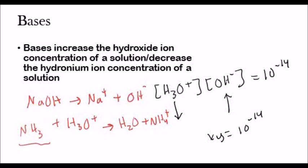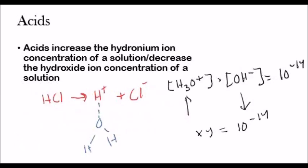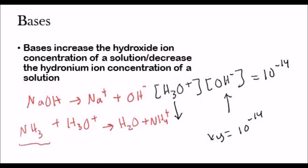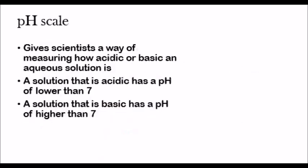Just make sure you know the definitions. An acid increases the hydronium ion concentration or decreases the hydroxide ion concentration. A base increases the hydroxide ion concentration and decreases the hydronium ion concentration. The pH scale gives scientists a way of measuring how acidic or basic an aqueous solution is. A solution that is acidic has a pH lower than 7, and a solution that is basic has a pH higher than 7.